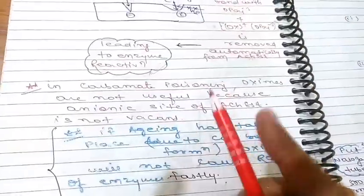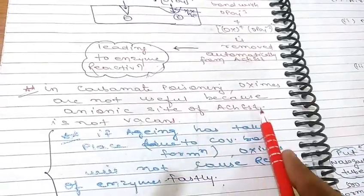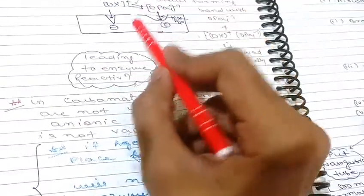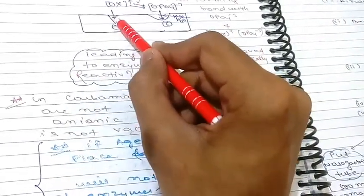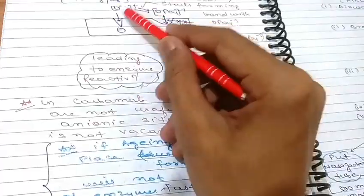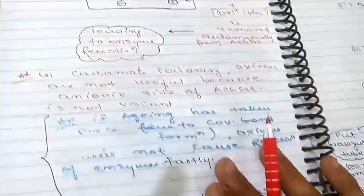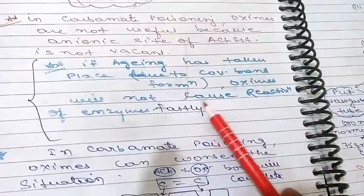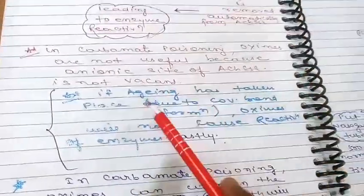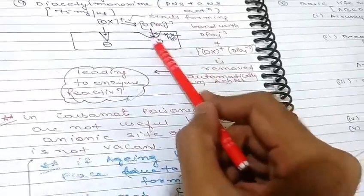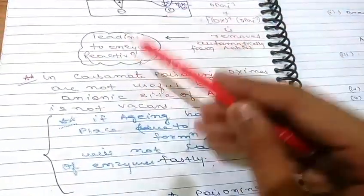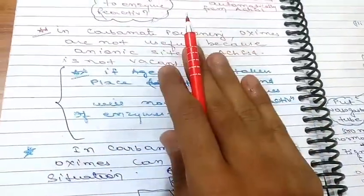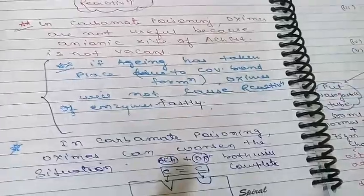In carbamate poisoning, oximes are not useful because in the anionic site of acetylcholinesterase is not vacant — as discussed, in carbamate poisoning both sites are occupied by carbamate. Oximes cannot bind to the anionic site because it is occupied, so no bond forms with carbamate and oximes cannot remove it. Additionally, if aging has taken place due to covalent bond formation by organophosphate, oximes will cause only very slow reactivation of the enzyme.